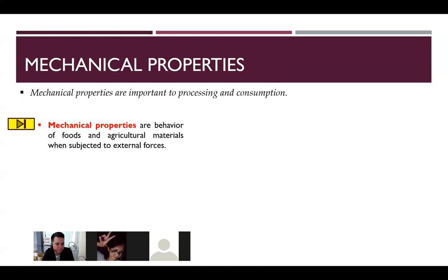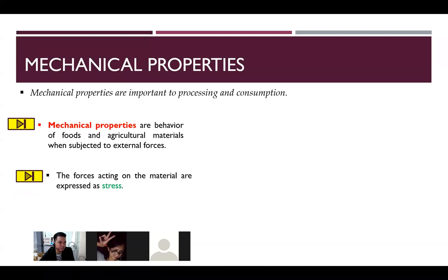For example, if you transport 10 metric tons of banana to China, the engineer for that plant must know the mechanical properties like density and maximum tensile strength — that's how mechanical properties apply in food quality and safety control. Mechanical properties are the behavior of foods and agricultural materials when subjected to external forces. The forces acting on the material are expressed as stress.